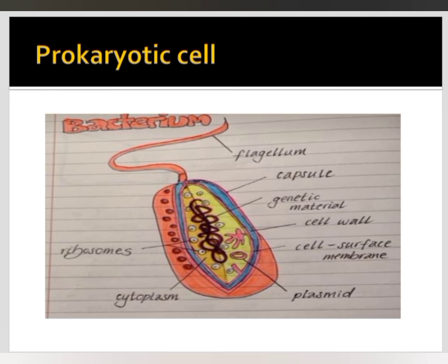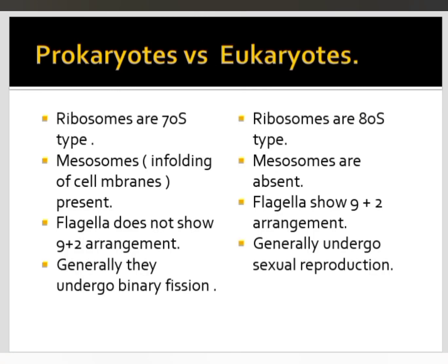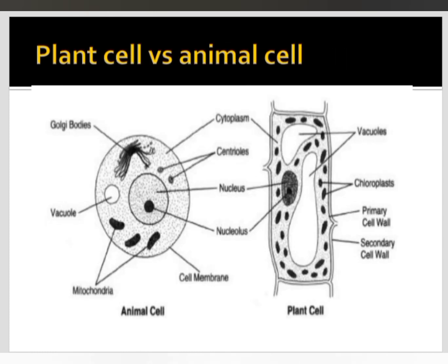Bacteria also contain flagella, cell wall, and plasmid (extra-chromosomal DNA), whereas eukaryotes have 80S type ribosomes, mesosomes are absent, and flagella show the 9+2 arrangement. One more difference between animal and plant cells: the cell wall is absent in animal cells but present in plant cells, made up of cellulose. These are the important differences between these cells. Thank you for watching, please subscribe to our channel.